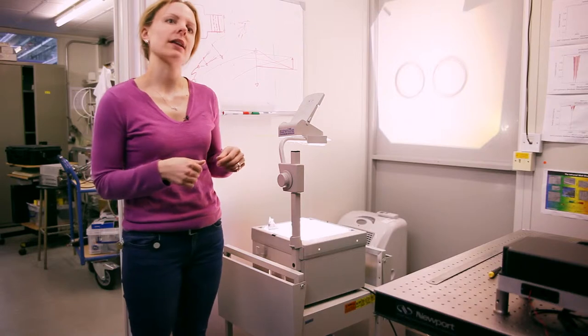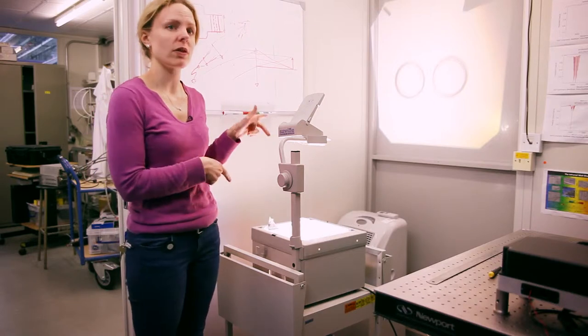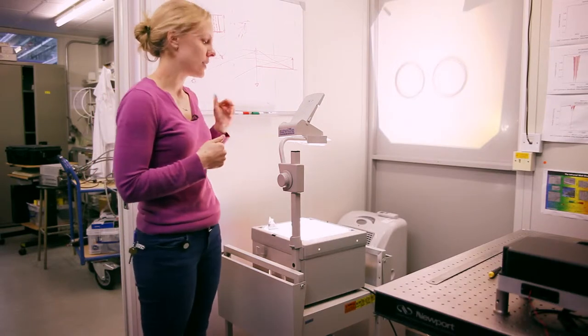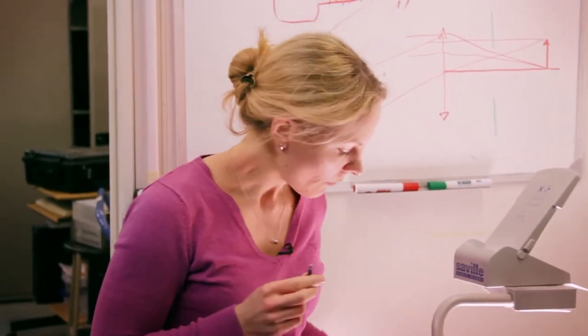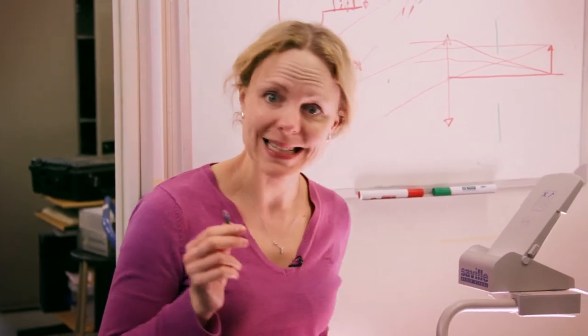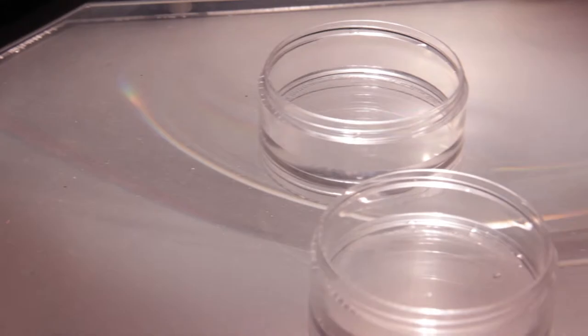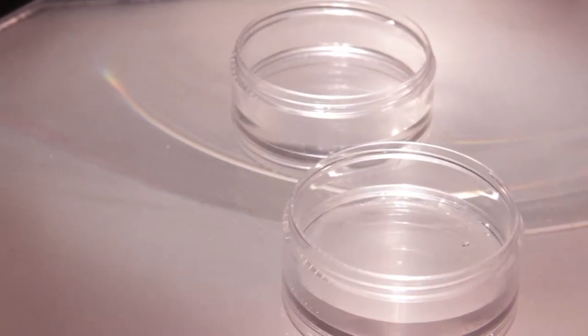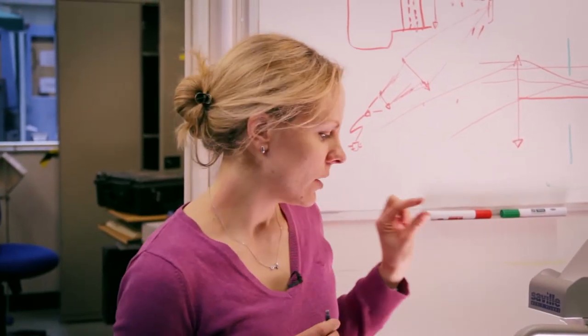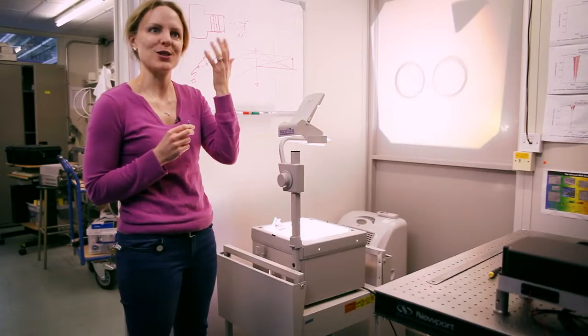In order to interpret satellite measurements we need to understand how light passes through the atmosphere and how it interacts with it. There are two main processes: scattering and absorption. This is a demonstration to show how it's very difficult to tell which is which. We have some ink and some milk — the ink represents gases in the atmosphere and the milk represents clouds, which scatter. These little petri dishes with water are like little layers in the atmosphere that we use to simulate what happens to light as it passes through.